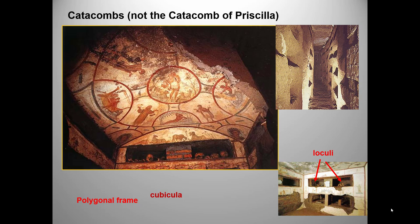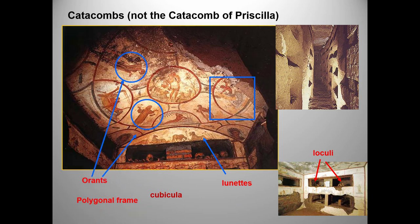This is not our required work — the Catacombs of Priscilla — but it's quite similar, and I've kept this slide because it contains so many useful vocabulary words. Polygonal frame is a term used in contemporary graphic design and it means just what it sounds like: a geometric shape drawn around a painting or design, in this case an oval that contains a spoked wheel pattern of paintings.